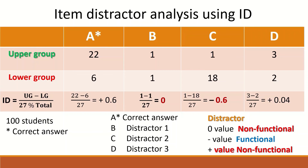For distractors B, C, and D: the ID value equals zero for distractor B, which means that both high-performing and low-performing students selected this distractor in equal proportion, thus it is ineffective and non-functional. Distractor C, on the other hand, has been selected by low-performing students — it attracted low-performing students and has a negative value, so this distractor is functional and effective. Distractor D is non-functional as it attracted more of the high-performing students than the low-performing students to select it.